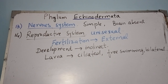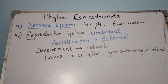The reproductive system of echinoderms is well developed. Most echinoderms are unisexual — sexes are separate — and they show sexual reproduction. Fertilization of gametes is external, occurring in ocean water. Development is indirect, meaning there is a larval stage. The larva is ciliated, free swimming, and shows bilateral symmetry.